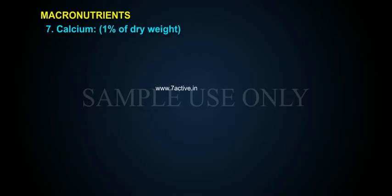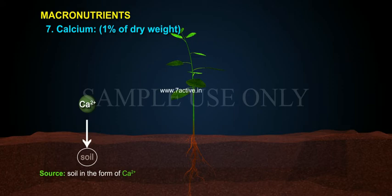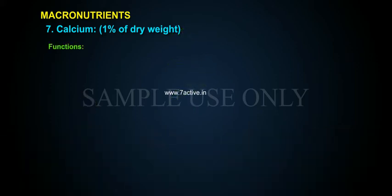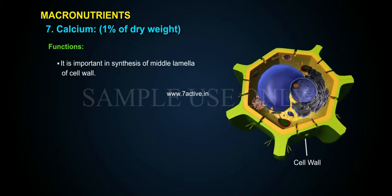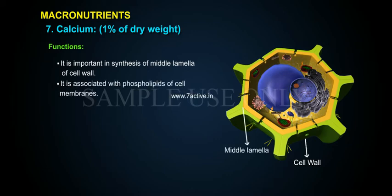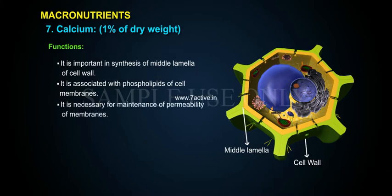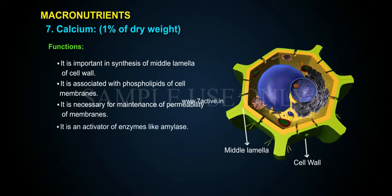Calcium constitutes 1% of dry weight. Source: soil, in the form of Ca2+. Functions: It is important in synthesis of the middle lamella of the cell wall. It is associated with phospholipids of cell membranes. It is necessary for maintenance of permeability of membranes. It is an activator of enzymes like amylase. It is necessary in small amounts for mitosis.